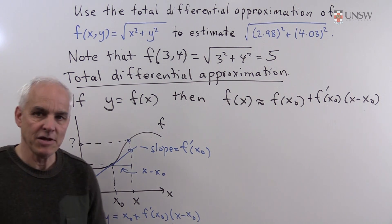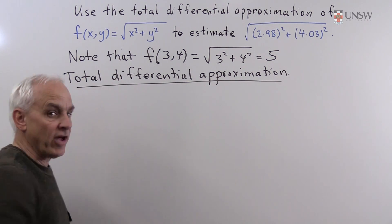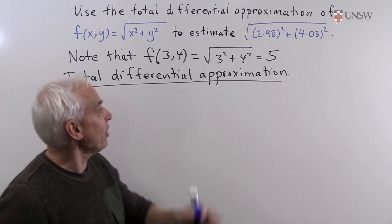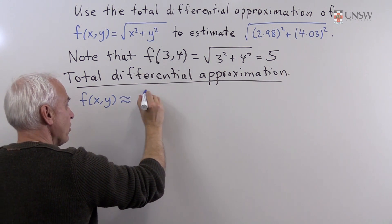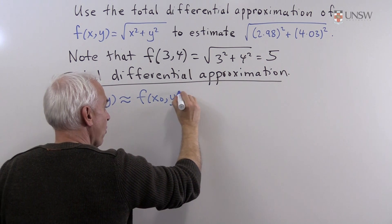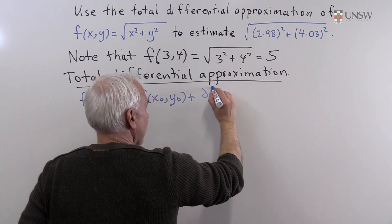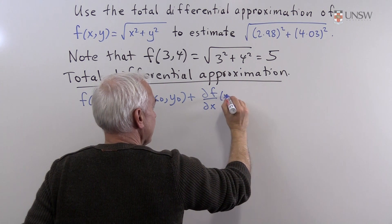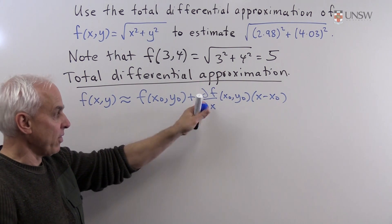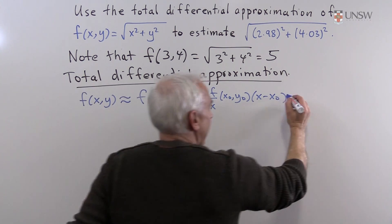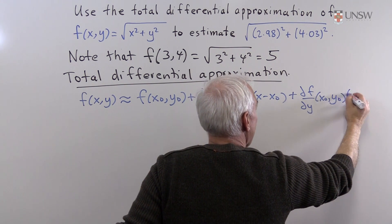That's the one-dimensional case. There's a corresponding two-dimensional case. Suppose we have a function of two variables, f(x, y). The total differential approximation is that the function's value at some point (x, y) is approximately the function's value at the base point (x₀, y₀), plus (∂f/∂x)(x₀, y₀) times (x − x₀), plus (∂f/∂y)(x₀, y₀) times (y − y₀).